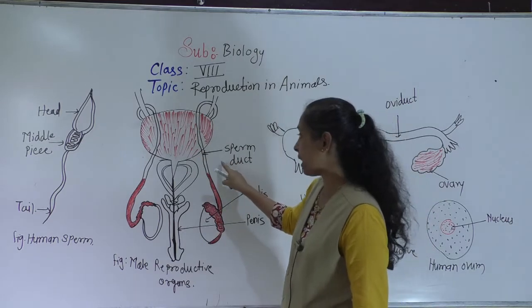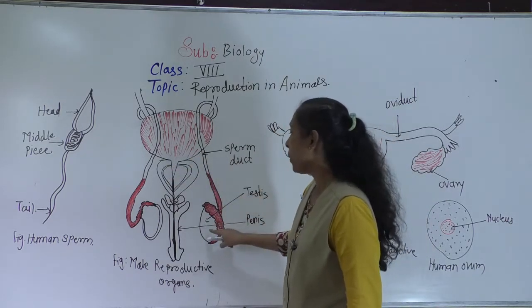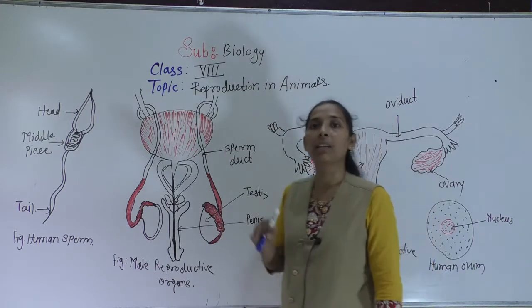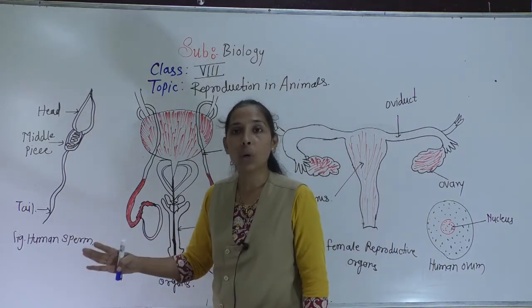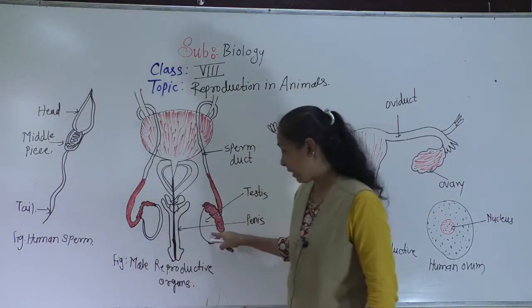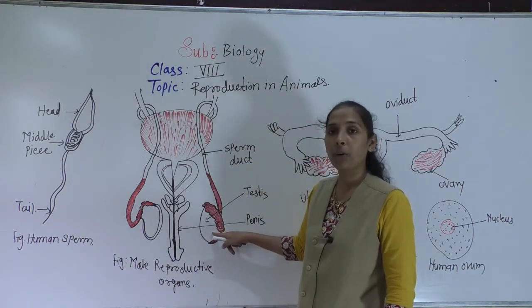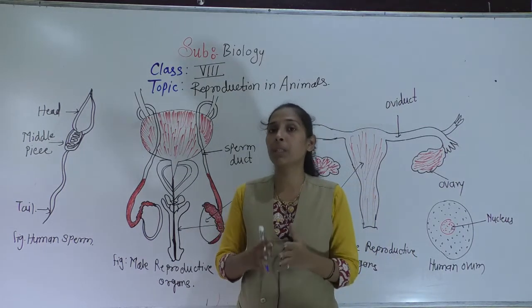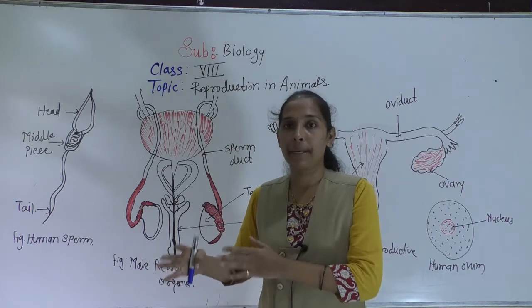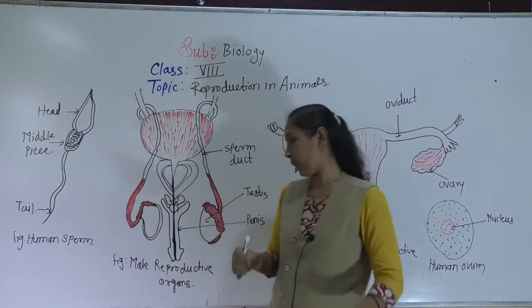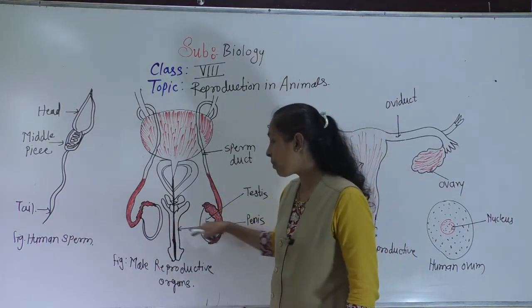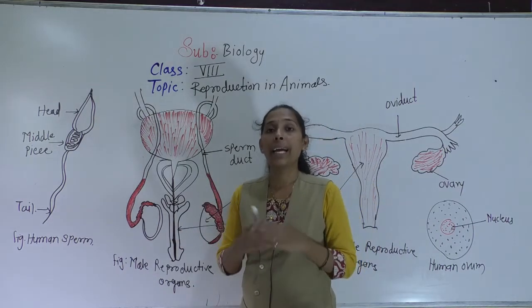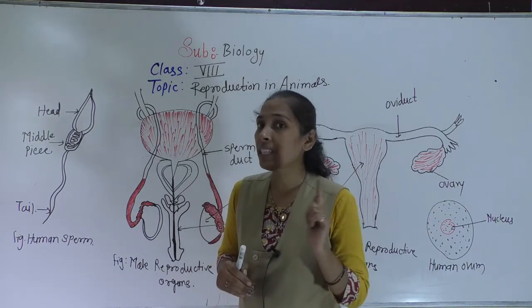So the three main organs of the male reproductive system are two sperm ducts, a pair of testes, and one penis. In the testes, sperms get produced. Sperms are the male gametes, which we have already discussed in our previous video. The production of sperm happens in the testes, and sperms are very small.